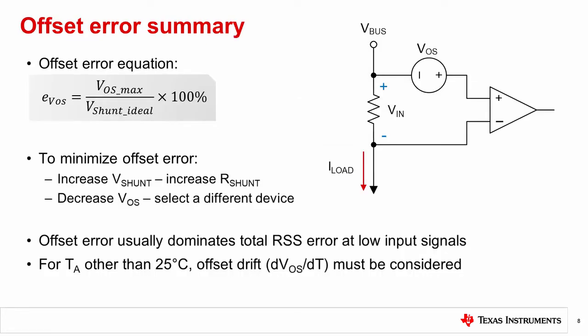Let's take a minute to summarize what we learned in this video. Number one, input offset voltage, or VOS, is defined as the DC voltage that must be applied between the amplifier input terminals to force the DC output voltage to 0. Number two, to calculate offset error, take the ratio of VOS max to the ideal shunt voltage.